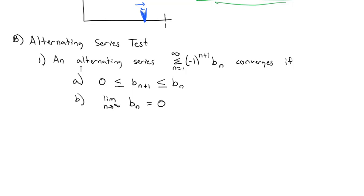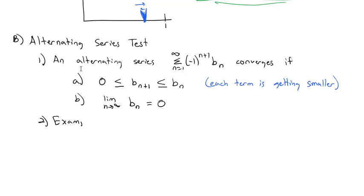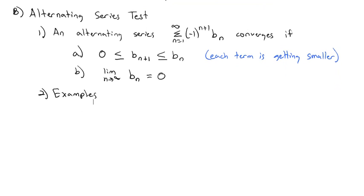If each term is getting smaller and the divergence test works on the non-alternating part, then the series will converge. So let's take a look at some examples where we can use this alternating series test.